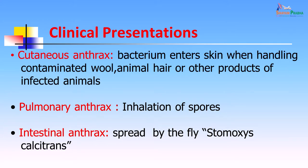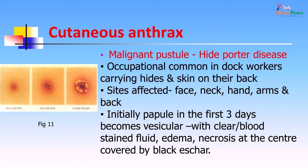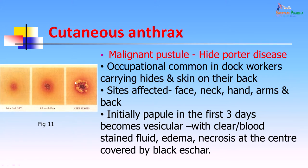Pulmonary anthrax can occur by inhalation of spores and usually occurs in people working in wool factories. Intestinal anthrax can occur by spread from the fly Stomoxys calcitrans, which when it sits on infected animals gets infected and can then contaminate food. Cutaneous anthrax can also present as Hyde-Porter's disease, an occupational disease seen in dock workers carrying hides on their back. Sites affected include face, neck, hand, arms, and back. The malignant pustule goes through stages: first a papule, then vesicular with clear fluid, then edema and necrosis at the center covered by a black scar, then fresh vesicles at the periphery.